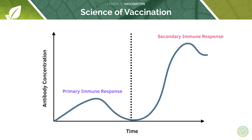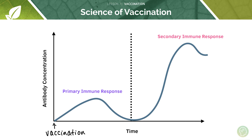Looking at this graphically: this is the primary immune response, which occurs upon vaccination. We have a fairly slow increase in antibody concentration in the blood, which then tails off as the pathogen is eliminated. I can tell it's slow because look at the gradient of this rise compared to the much steeper gradient of the rise in the secondary immune response, which occurs after second exposure to the pathogen.